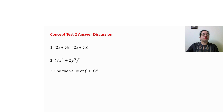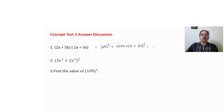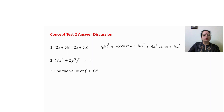Let us do answer discussion for concept test 2. Here we have (2a plus 5b) whole square. I am writing the direct answer: first term whole square plus 2 into first term into second term plus second term whole square. This gives 4a square plus 20ab plus 25b square.